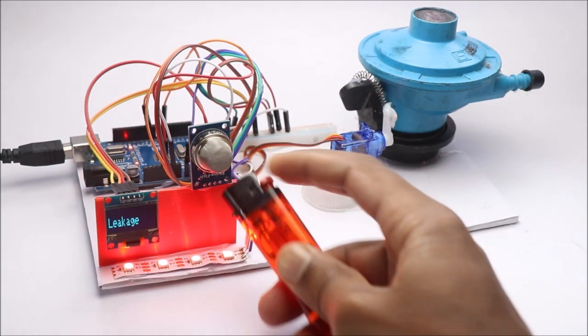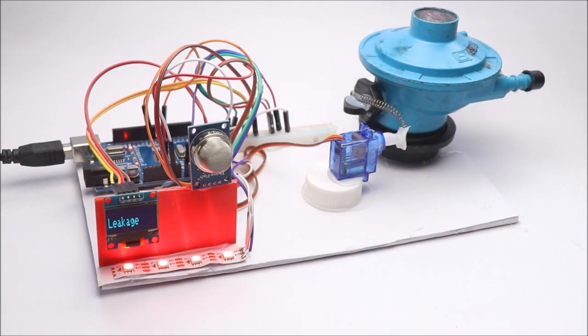I will use the gas from this lighter. As you can see, upon exposing the gas to this sensor, the strip turns to red and OLED shows leakage.